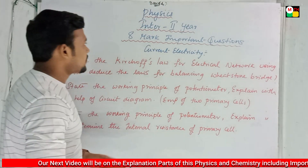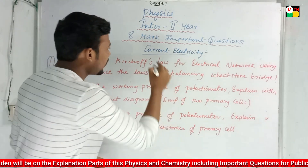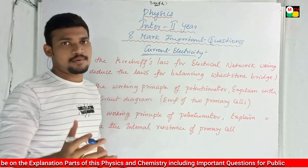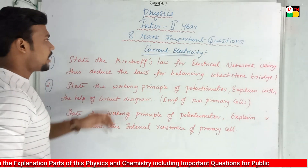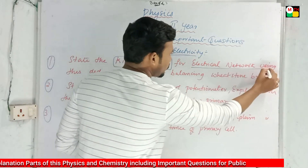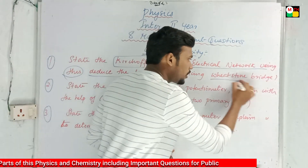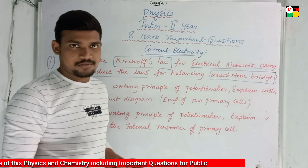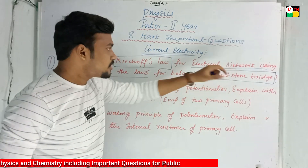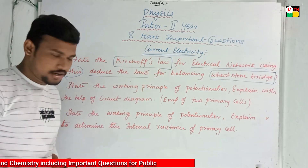The next important questions come from current electricity. The first important question is: state Kirchhoff's laws — this is a very important question for electrical networks. Using Kirchhoff's laws, deduce the condition for balancing the Wheatstone bridge. The diagram and the procedure are very important.